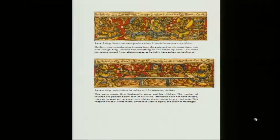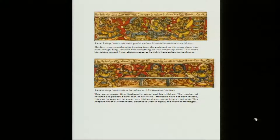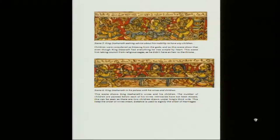Seen in the picture are three people all in a row, but three of them are facing Dasharatha and Dasharatha is facing the other side. That gives a sense of asymmetry — although there are four figures, because of the eye direction it has an asymmetrical order in the picture. The next picture shows King Dasharatha in his palace with his wives and children. The number of children are painted below each of the wives; intricacies have not been missed anywhere. There are two children drawn under the king's third wife — distance is used to signify the order of marriages.